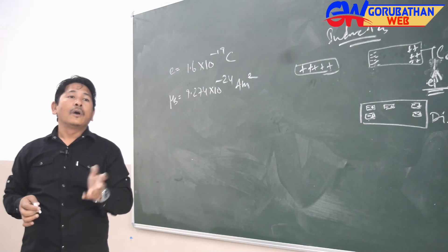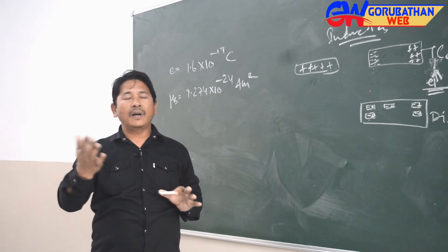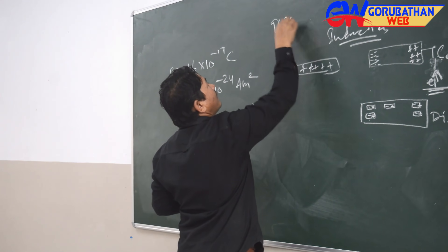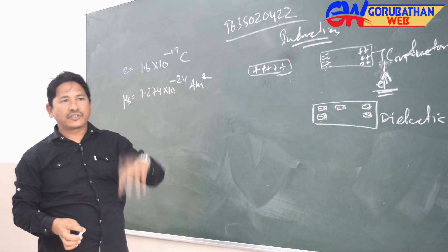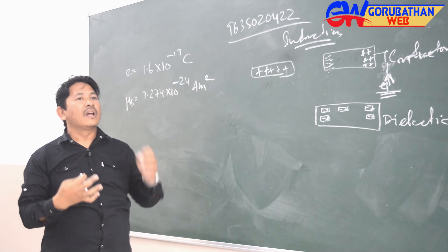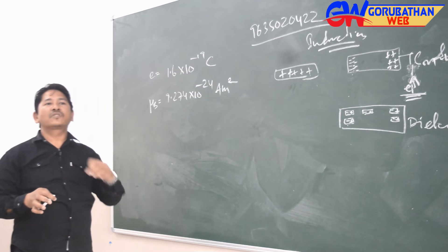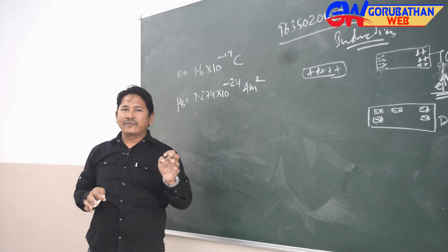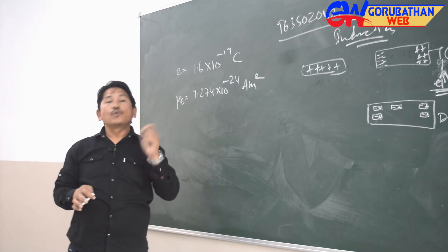If you want me to continue with the first chapter, you can reach me at 9635020422. I'll consider the majority of suggestions for the next class. Today I'm pushing straight to the second chapter — electric intensity and potential — beginning with Coulomb's Law.